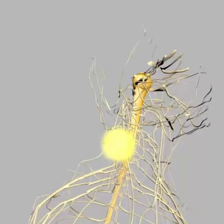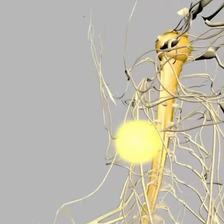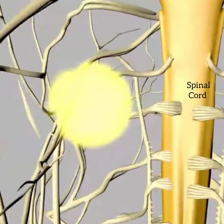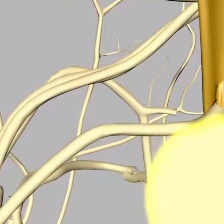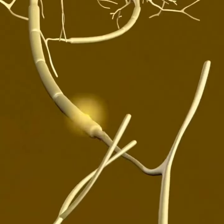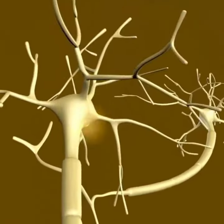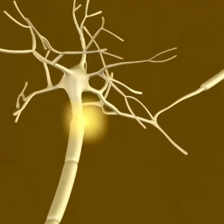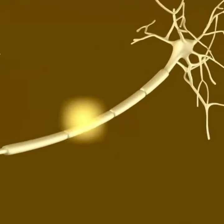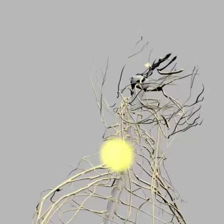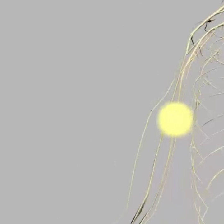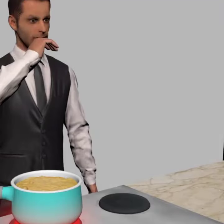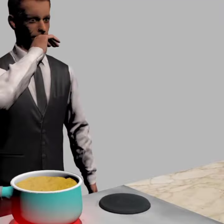First, a sensory receptor detects a stimulus and a signal travels through afferent neurons towards the spinal cord. When the signal passes through the gray matter of the spinal cord, a message is relayed from the afferent neuron through an association neuron to an efferent neuron. This leads to a quick automatic reflex reaction that occurs without the need for processing in the brain.